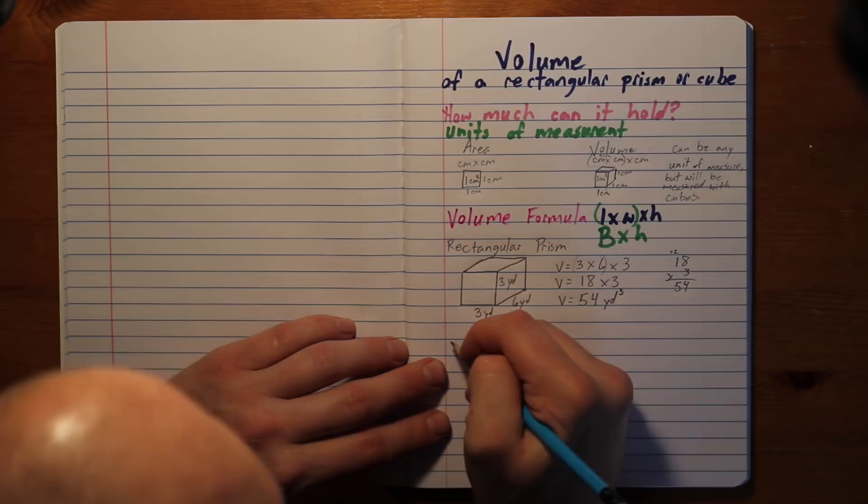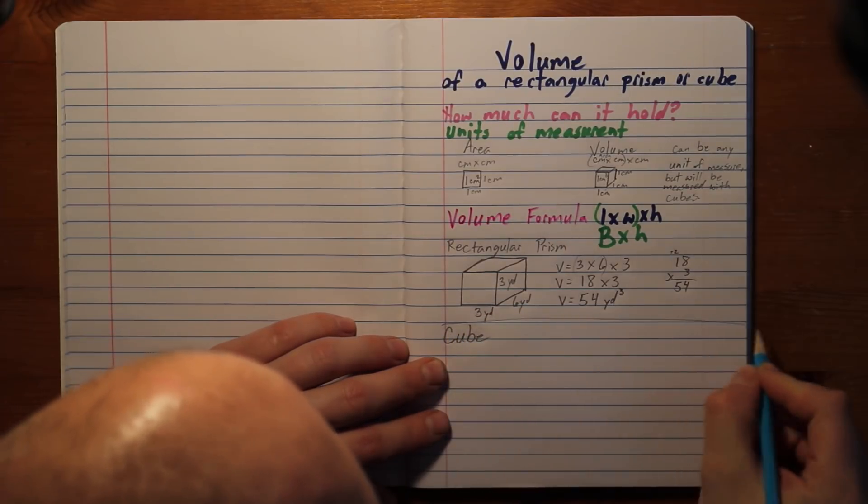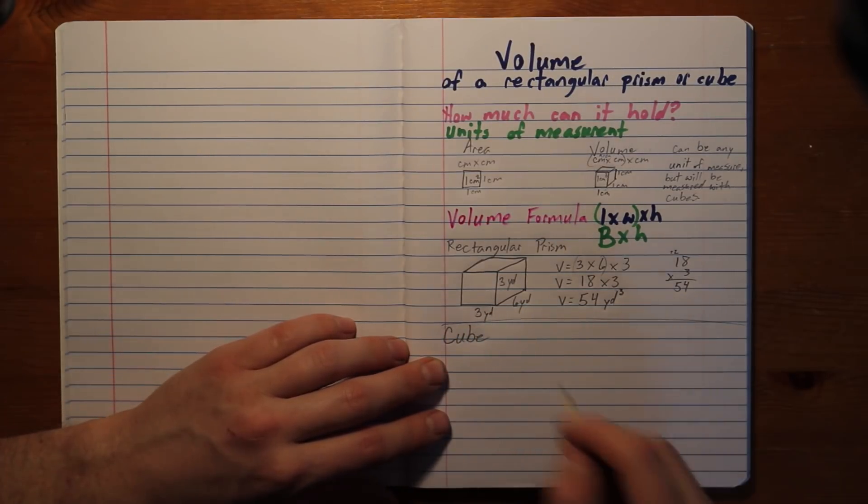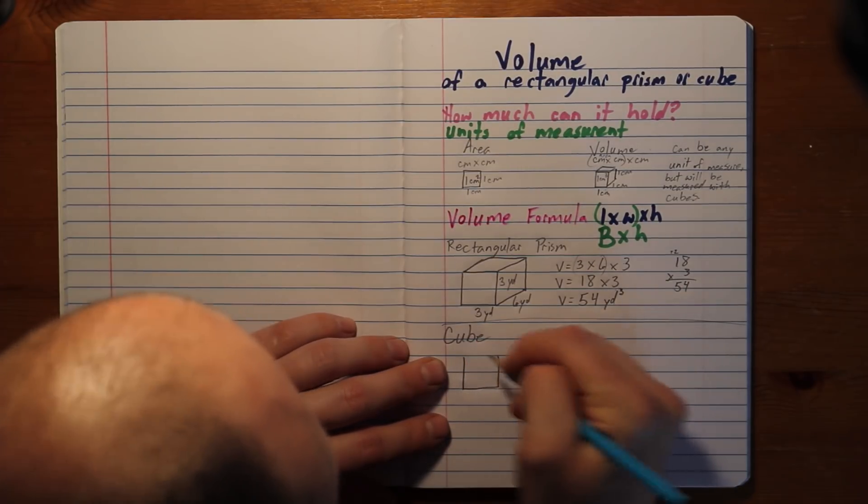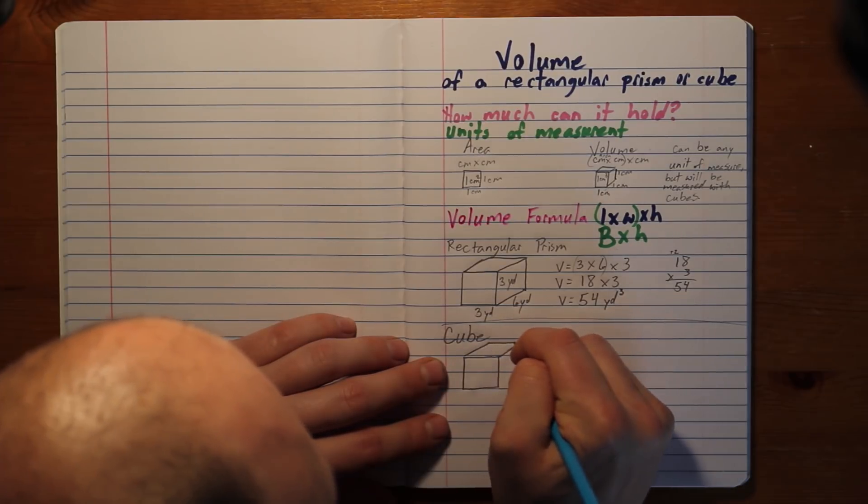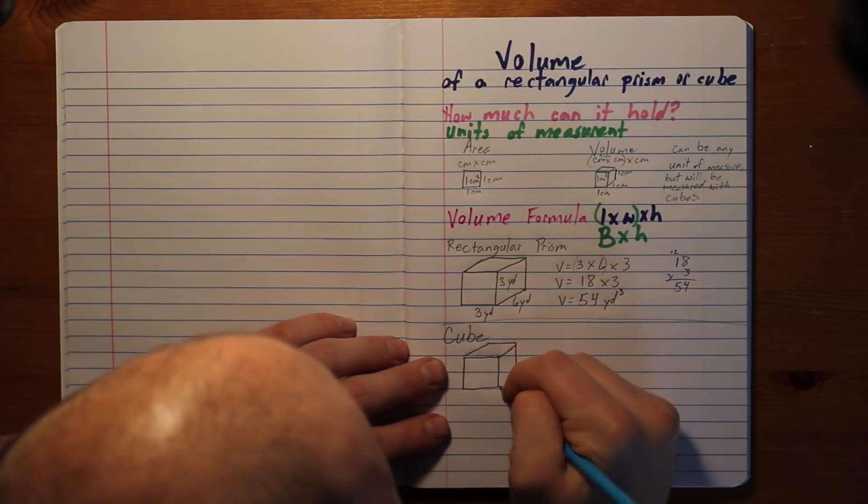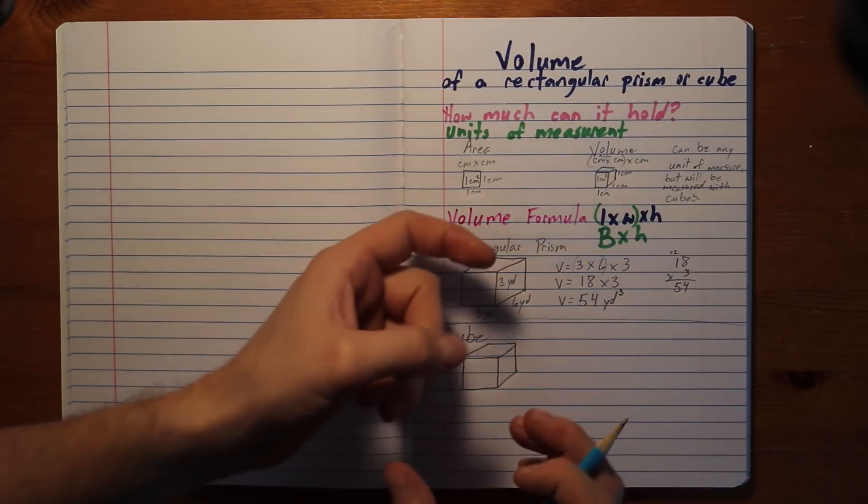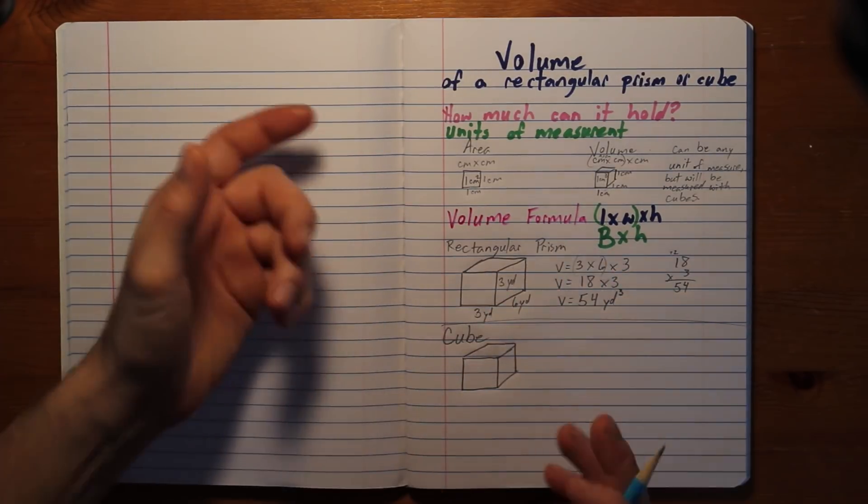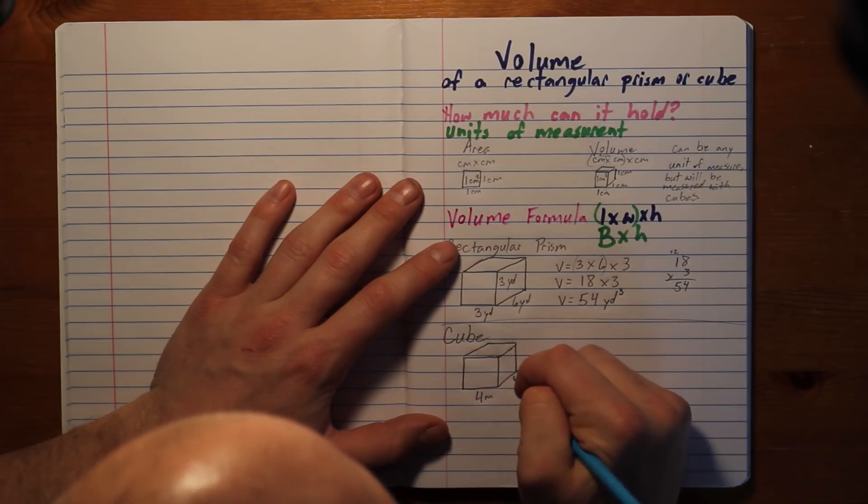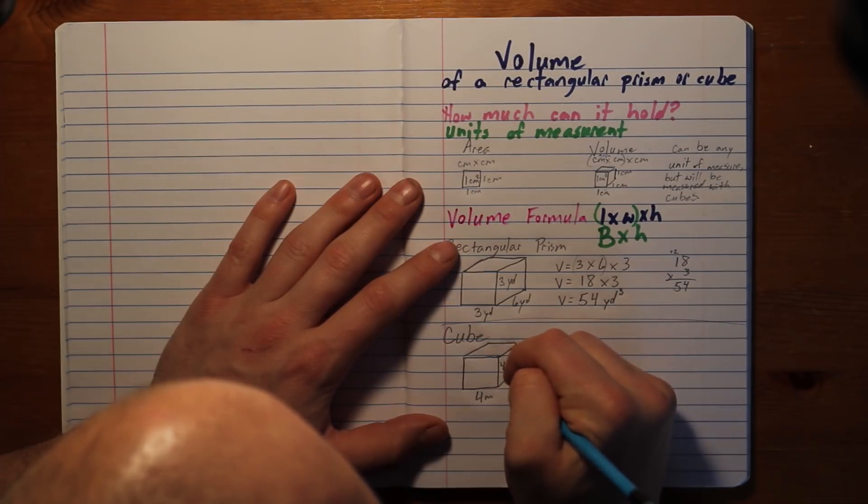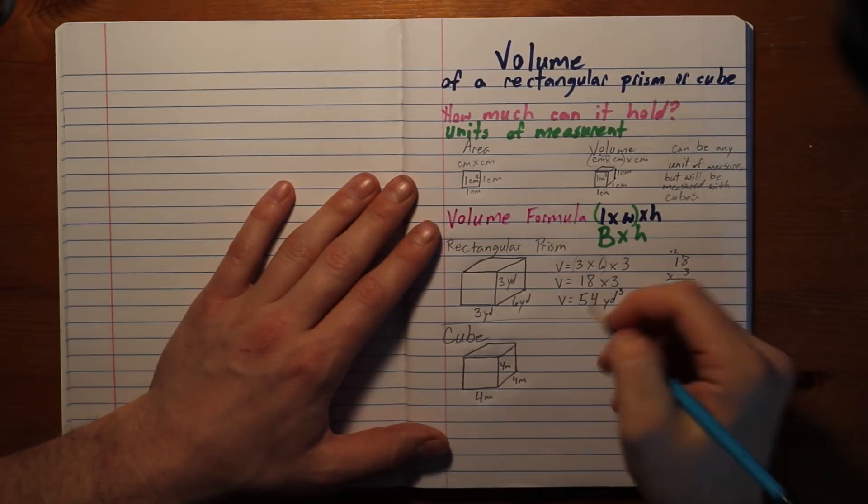Now let's see. What if we had a cube? So this is one. So now we're doing a cube. A cube looks square on all sides. It's the same measurement. If I turn this square, no matter which way I turn it, it's going to have the same. So let's say it's four meters, four meters, and four meters. That's a cube because it's all the same.